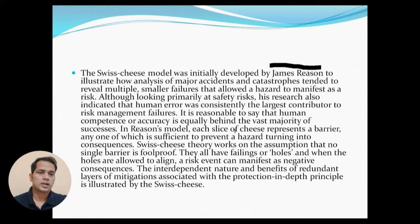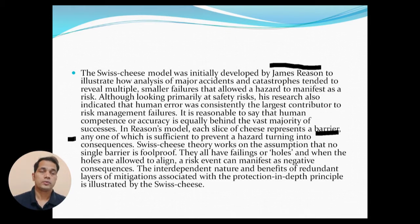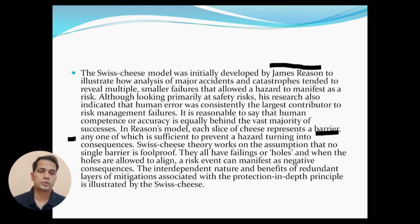In his model, each slice of cheese represents a barrier, any one of which is sufficient to prevent a hazard turning into a consequence. This theory works on the assumption that no single barrier is foolproof. Any hazard which will turn into a consequence has to pass through all the barriers — they all have failings or holes. When the holes are allowed to align, a risk event can manifest as a negative consequence. The interdependent nature and benefits of redundant layers of mitigation associated with the protection-in-depth principle is illustrated by the Swiss cheese.